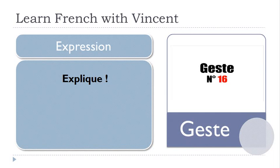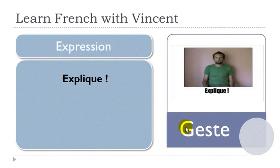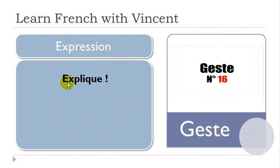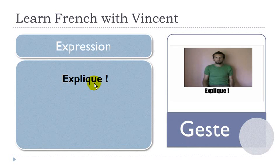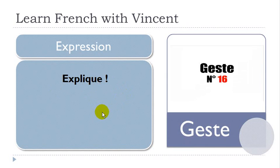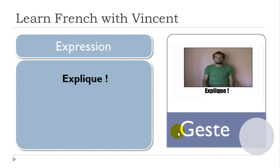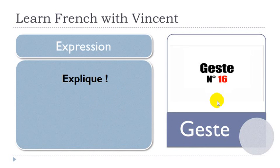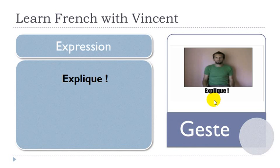The screen will be divided in two. You will have the first part here with my friend Laurent. He will do the gesture for you and you will have the expression that normally comes with this gesture. The first one is EXPLIQUER — to explain. It's when you're discussing with someone and you want more information regarding what he or she just said. That's the gesture Laurent makes to require the person you're talking with to explain.